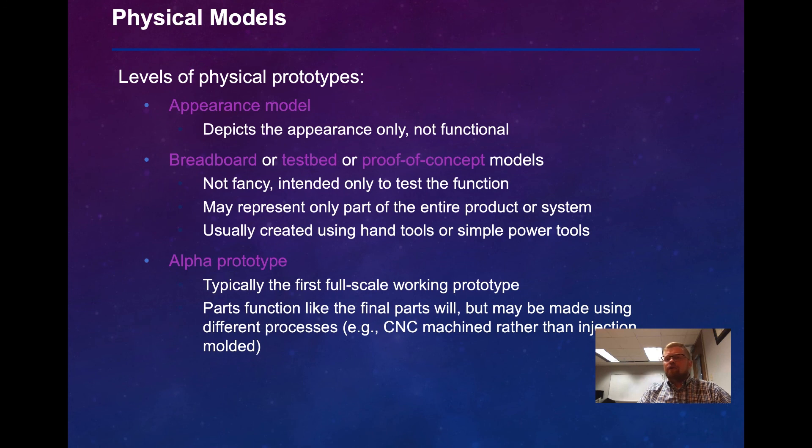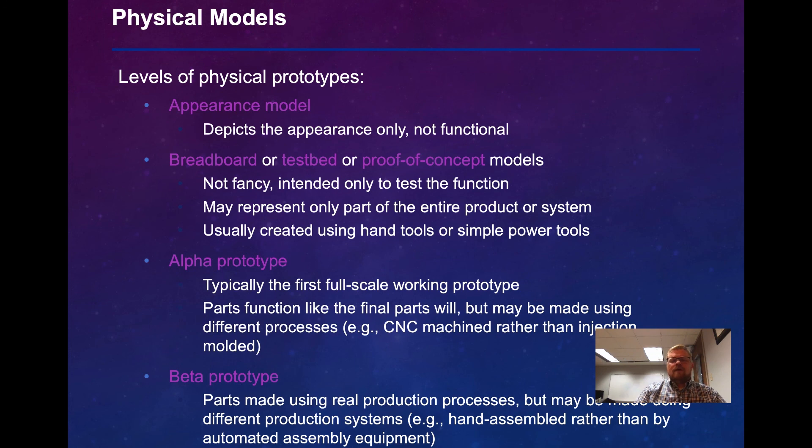Then we have what's called the alpha prototype. This is typically the first full-scale working prototype. Parts function like the final parts will, but may be made using different processes. In other words, you might make it in-house using CNC machining rather than something that's a larger process like injection molding. A beta prototype is parts that are made using the real production processes, but these may be made using different production systems. In other words, they may be hand-assembled rather than using automated assembly.